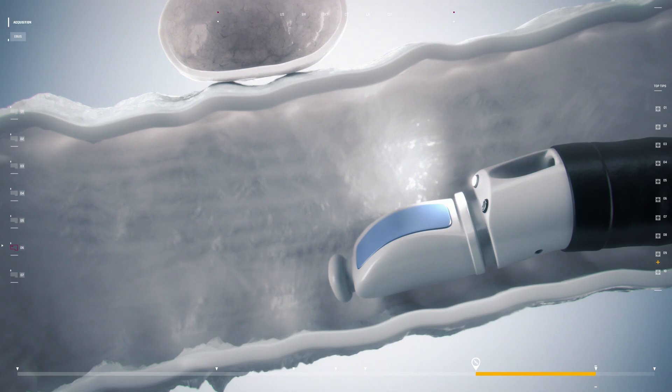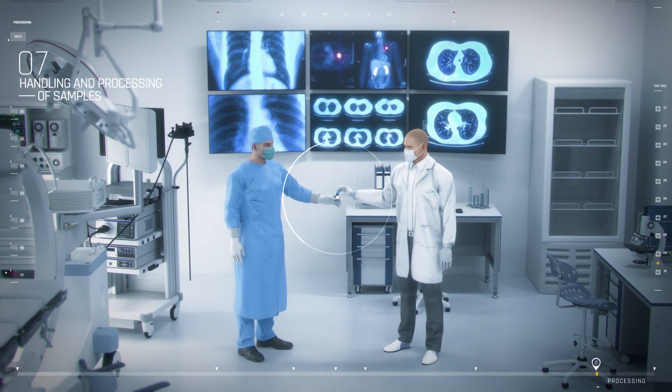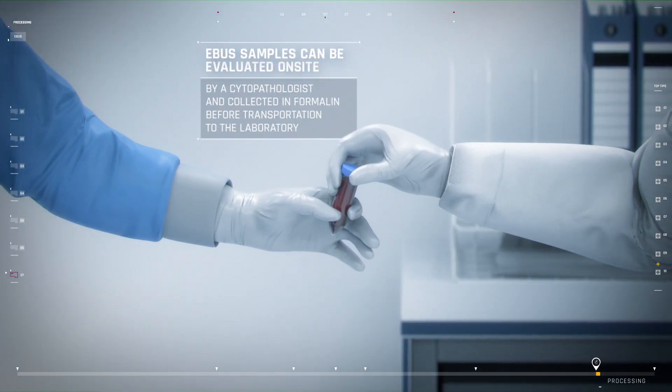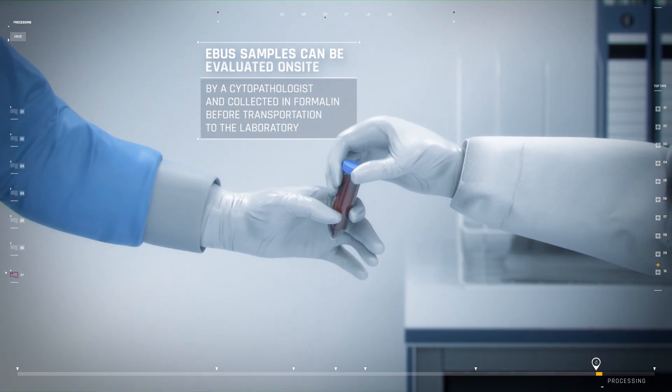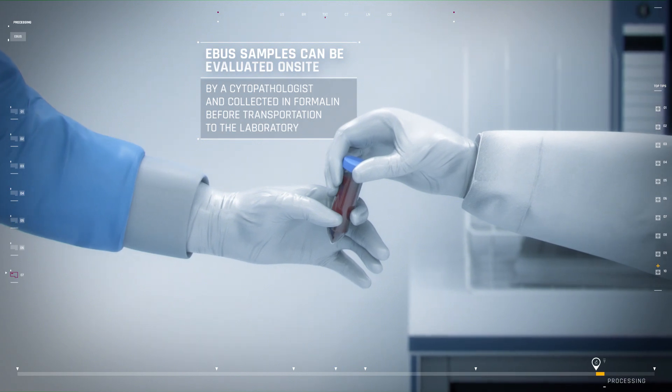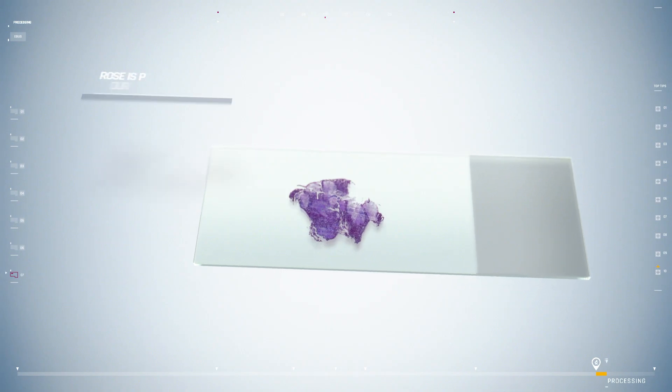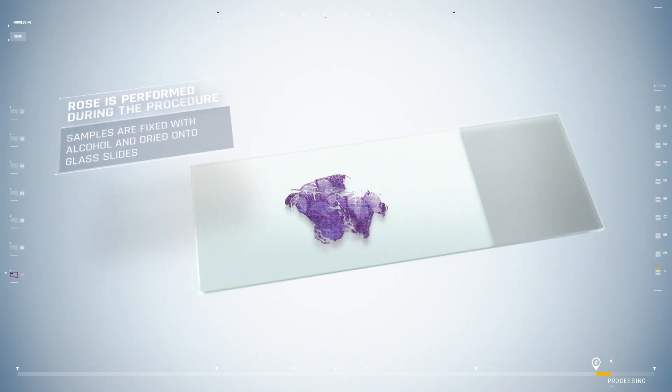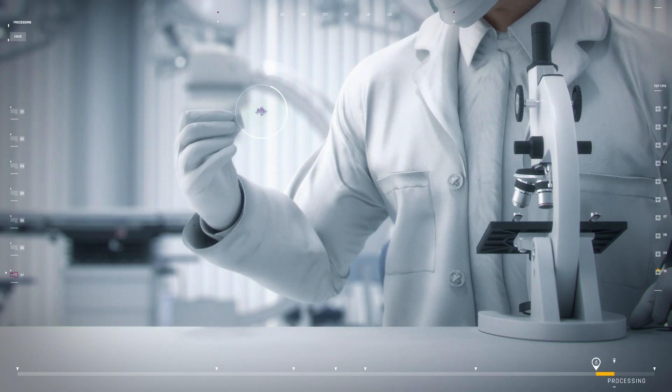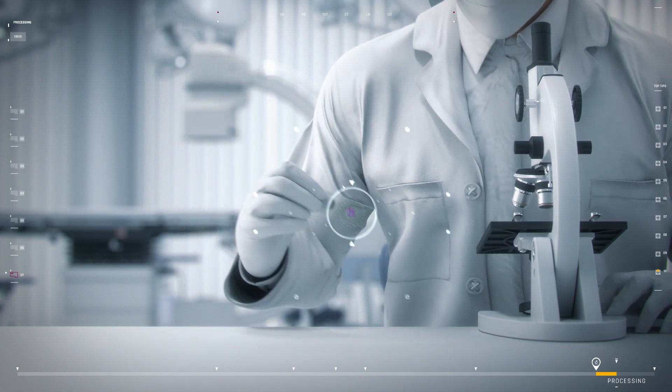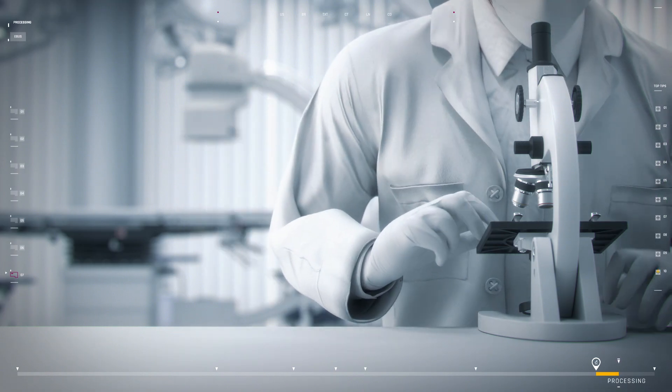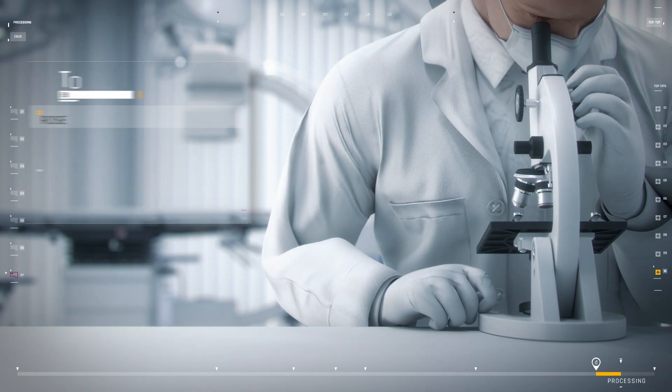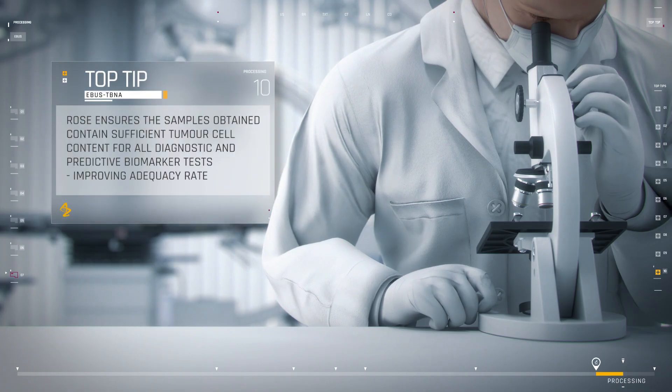The samples obtained may be analyzed on-site using rapid on-site evaluation (ROSE) and are also collected in formalin. For ROSE, aspirated material is smeared onto glass slides, air dried, and fixed in 95% alcohol. Dried smears can be evaluated by an on-site cytopathologist to confirm adequate lymph node sampling with respect to the presence of malignant cells, and in a substantial number of cases, a preliminary diagnosis can be made.